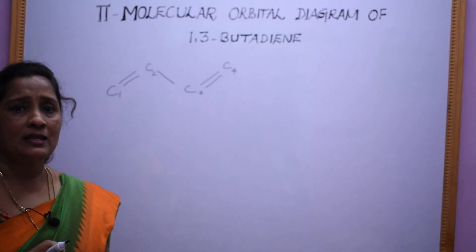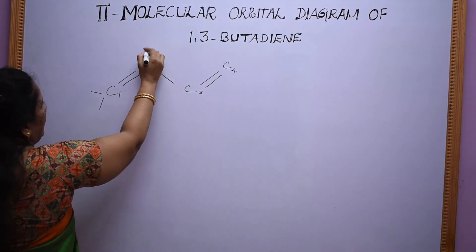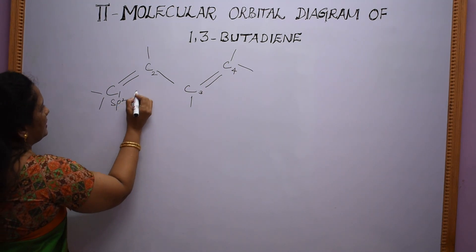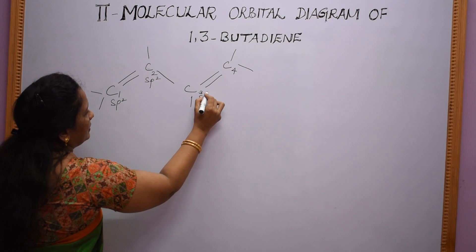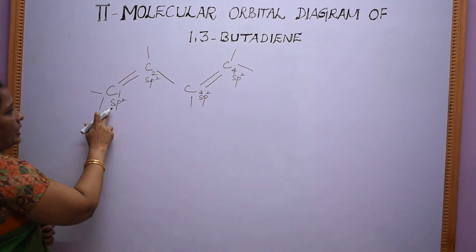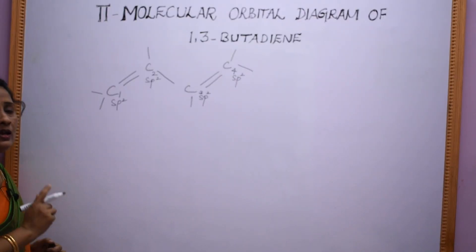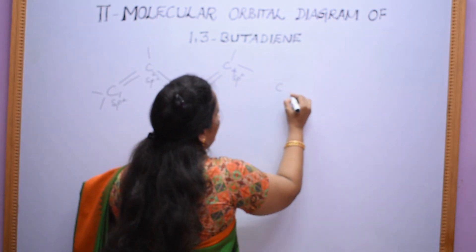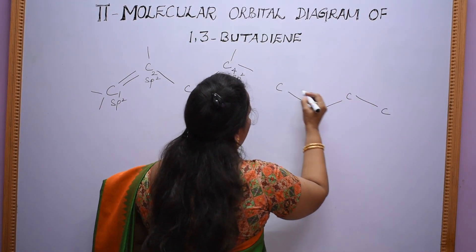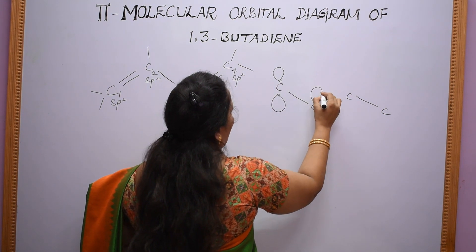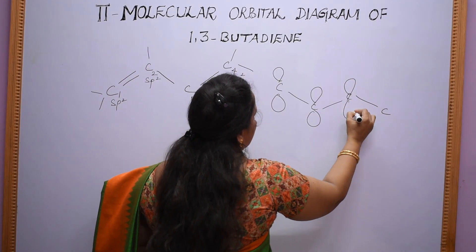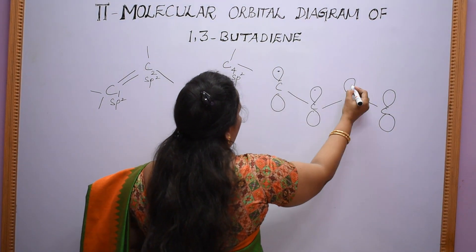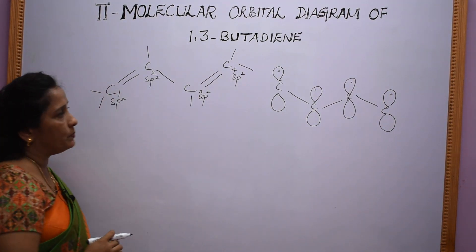Each of these carbon atoms is sp2 hybridized. Each sp2 hybridized carbon atom contains one unhybridized p-orbital, and that unhybridized p-orbital contains a single electron.